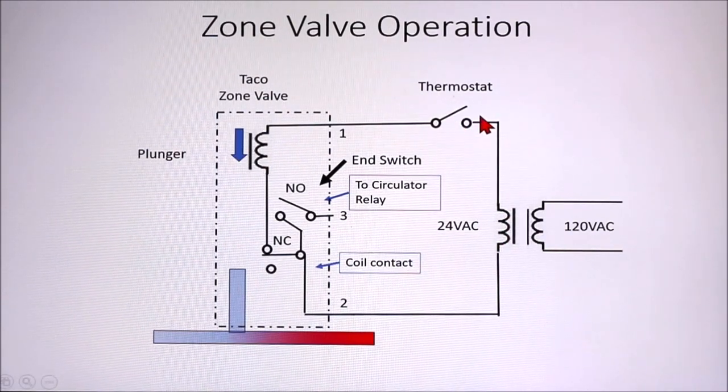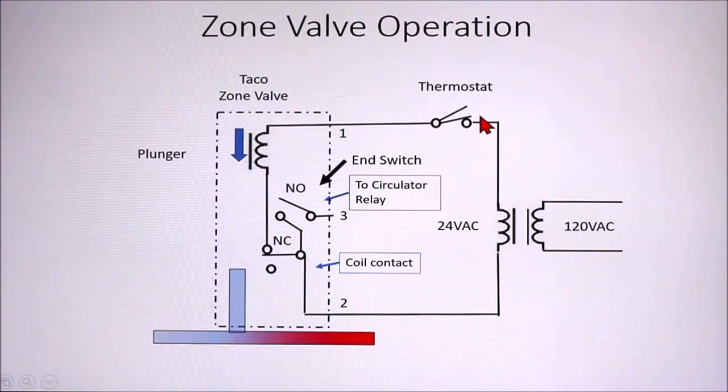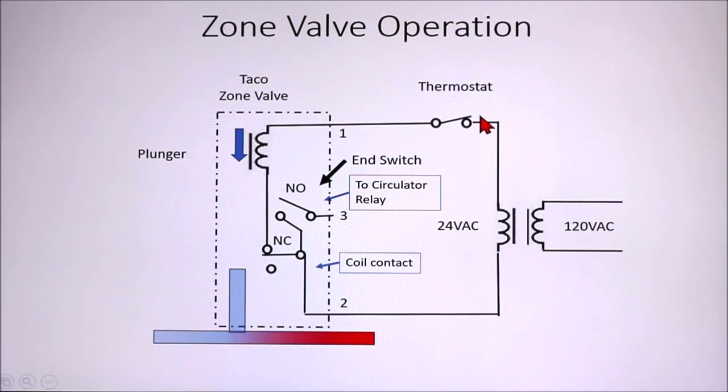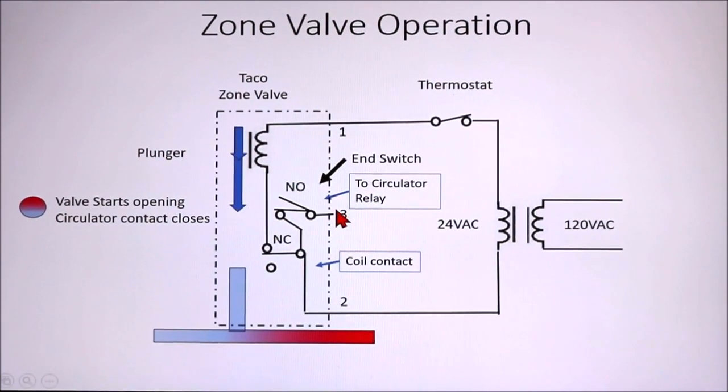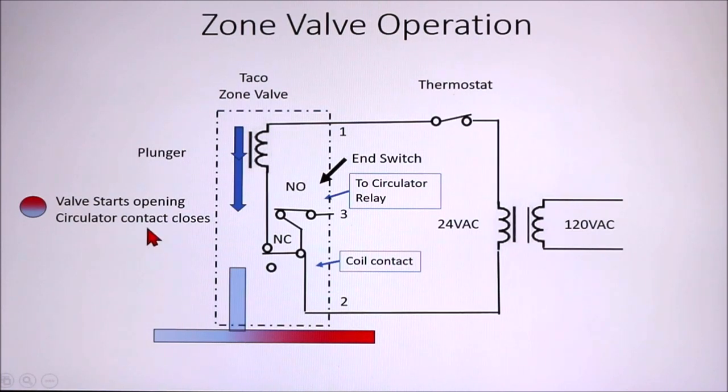So the first thing that happens is when the thermostat calls for heat, it closes like that. That allows current to flow through the coil of the zone valve, heat up the wax, and start moving the plunger. That happens, and at the same time, the circulator relay contact closes, and the valve starts opening. It starts to push on this part of the valve, which begins the circulation of hot water.